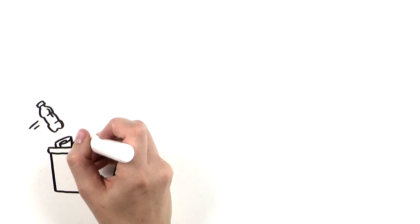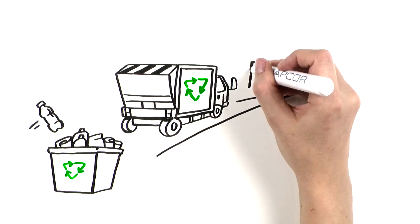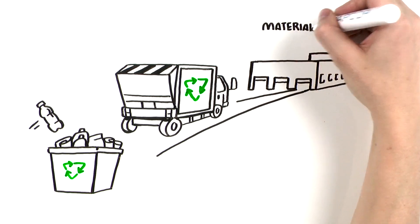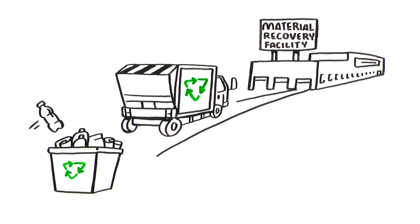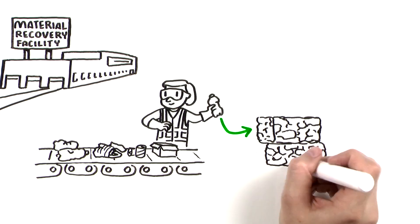After you toss your bottle into the bin, it's picked up by your local waste hauler and delivered to an intermediate processor, often a material recovery facility, or MRF, where recycled materials are sorted and aggregated and PET is baled.